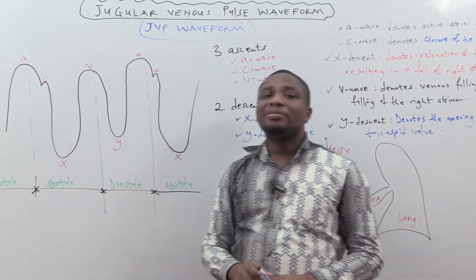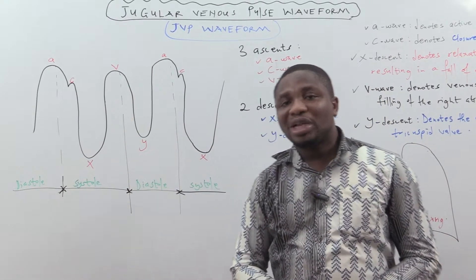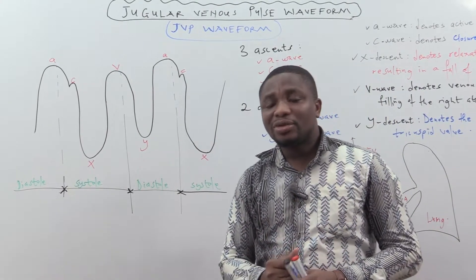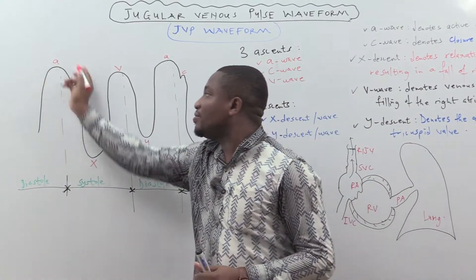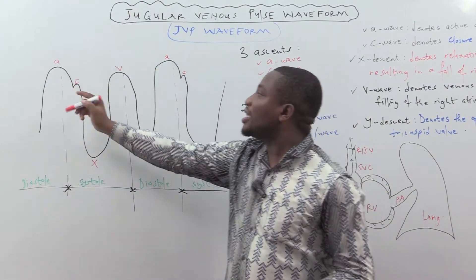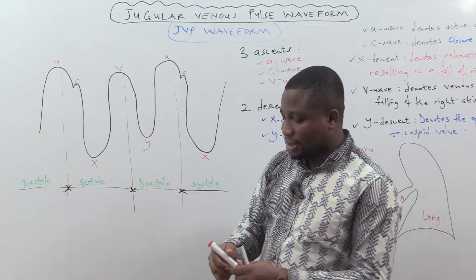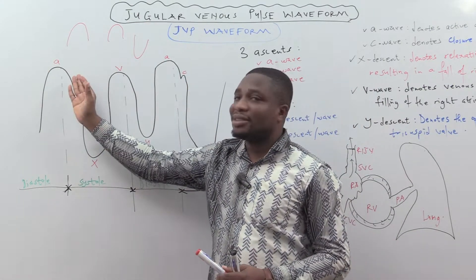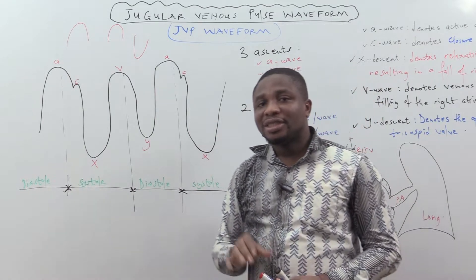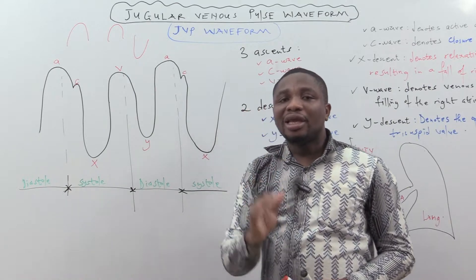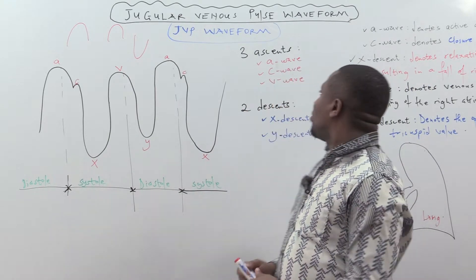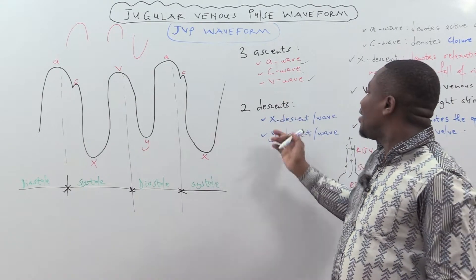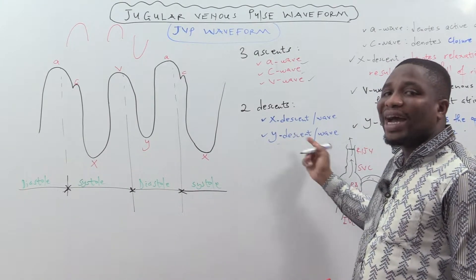This is a diagram depicting the waveform of the jugular venous pulse. The jugular venous pulse waveform has what we call the ascent and the descent. When we say ascent, we are referring to the positive deflection, those that are moving up. That's what we are referring to as the ascent. The JVP waveform has three ascents and two descents. We have the A wave, the C wave, and the V wave. And for the descent, we have the X descent and the Y descent.